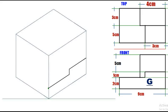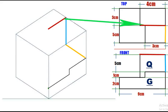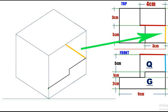Next, we have plane Q, which has a height of 5 centimeters and a width of 4 centimeters. Sketch it accordingly. Extend plane G by 5 centimeters, referring to the top view for the depth.